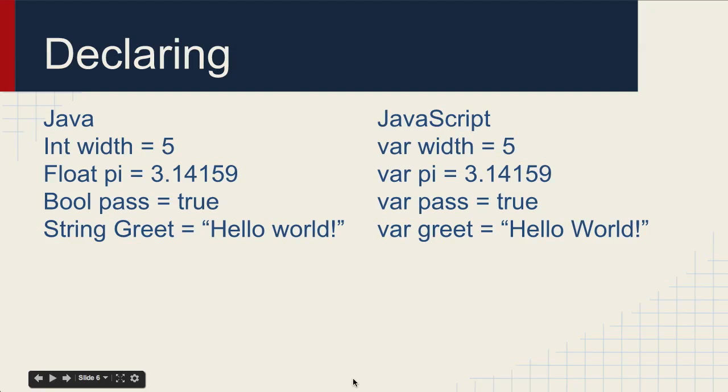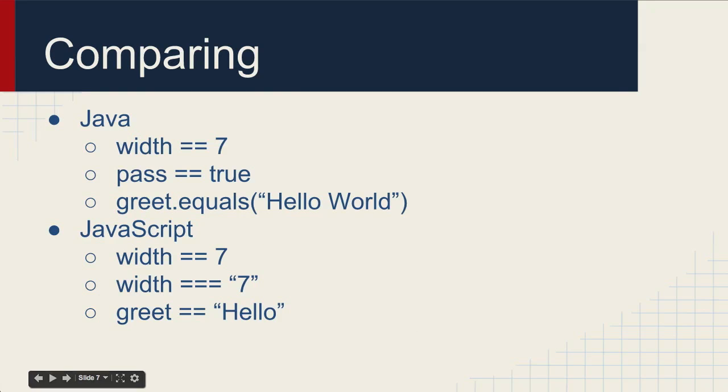So when you want to compare two variables, in Java you would say width and then you use a double equal sign to compare width with 7 - the value that width contains with 7, to compare the value that pass contains with true. In Java if you're comparing strings though, you can't do this because this is an object, which we're probably not going to talk about because that's pretty advanced. In JavaScript there are two different ways to compare things. There's the double equal sign and there's the triple equal sign. Basically what this means is this makes sure that the types are the same. This kind of gets around the weak typing issue.